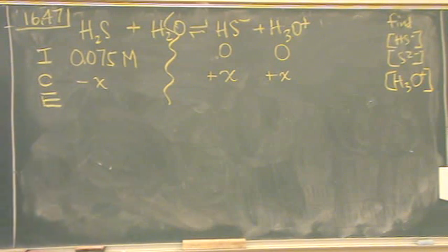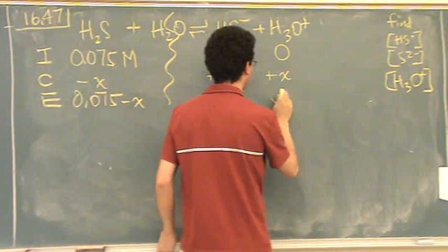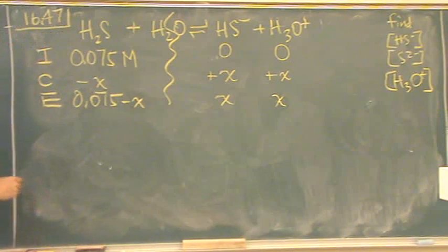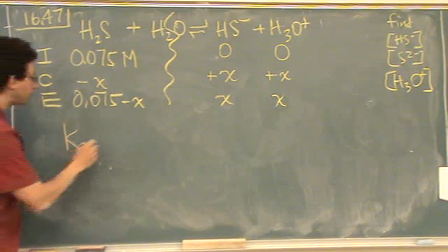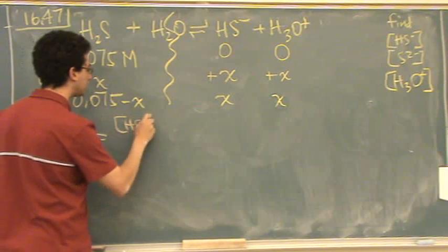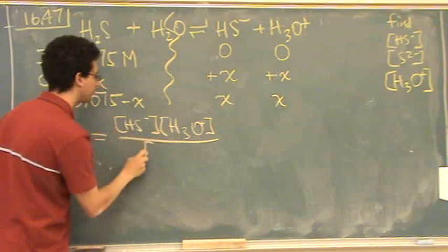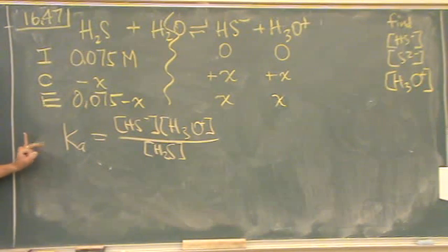Now I'm going to write my Ka. Let me write it out first. First of all, this should not be called Ka. What should it be called? Ka1. It's Ka1 because it's the first loss of the proton. I need that numerical value.